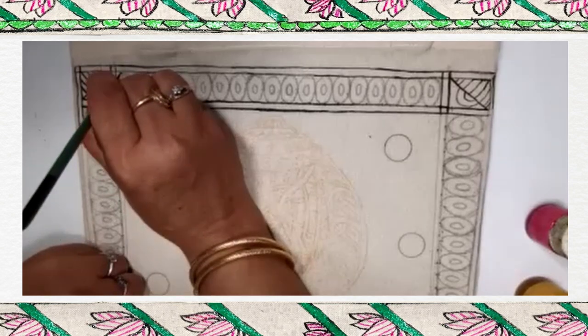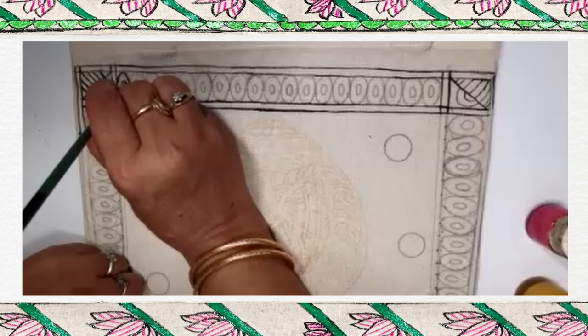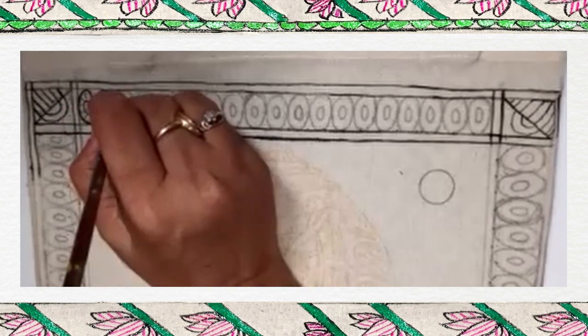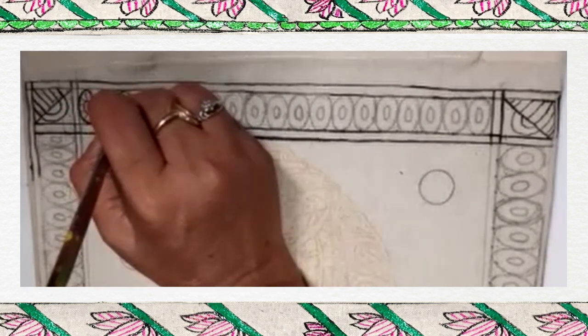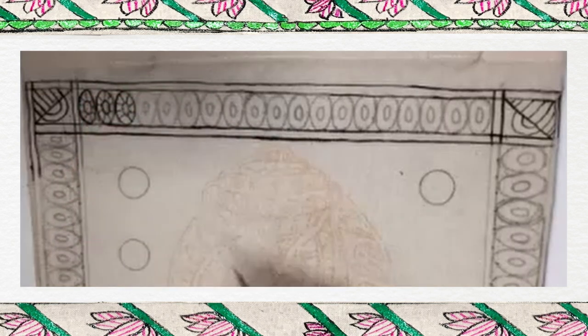We will start painting O and inside the O, I am painting another one. Inside this O, we will do bharni, we can also do kachni with some other paint, some other color paint.